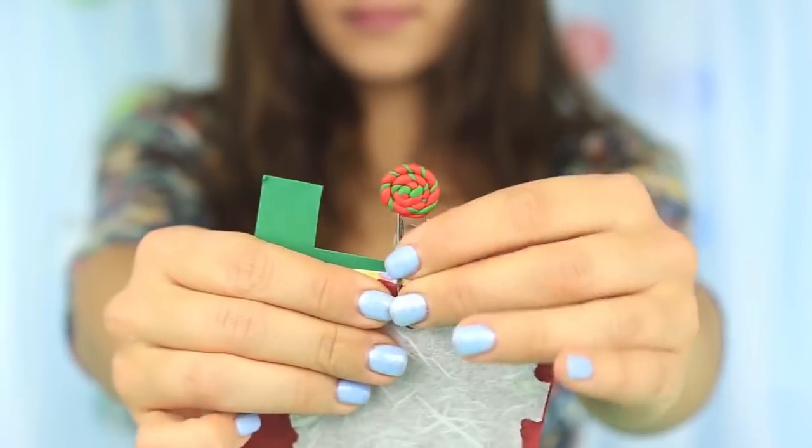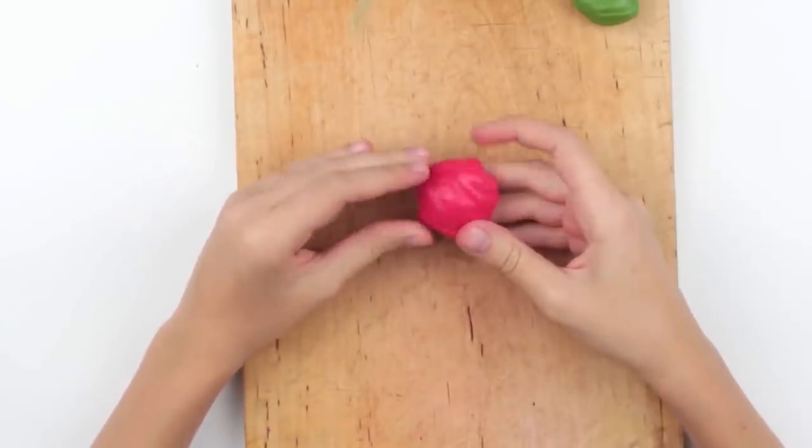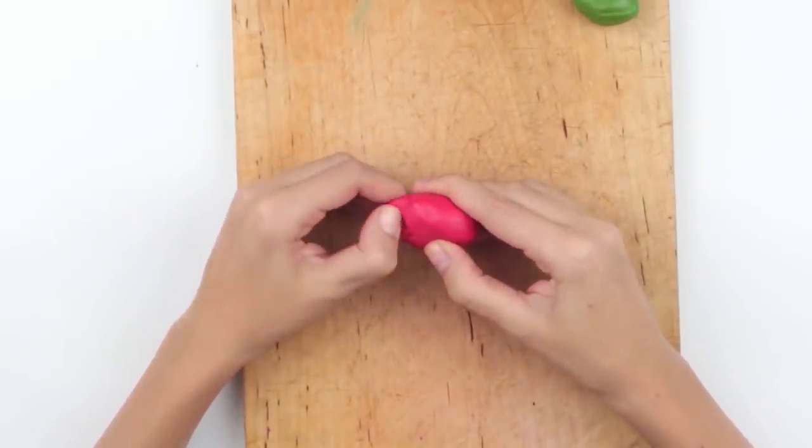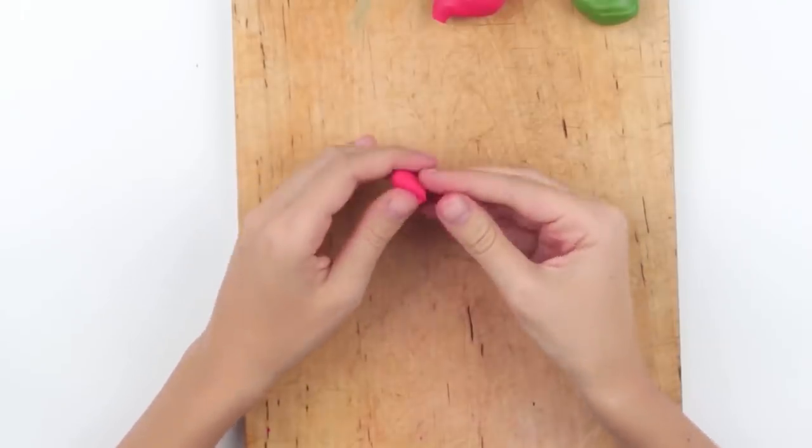Wow! How cute! A lollipop paper clip and full red lips! We'll need two colors of the polymer clay. Green and red. Start with red. Take a small piece. Knead it and roll a ball.